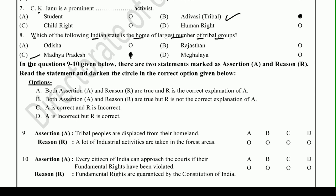In questions nine and ten, there are two statements marked as Assertion (A) and Reason (R). Read the statements and darken the circle in the correct option. If both the statement and its reason are correct, choose option A. If the statement is correct but the reason is not, choose option B. If the statement is correct but the reason is not in the book, choose option C. If the statement itself is incorrect, choose option D.